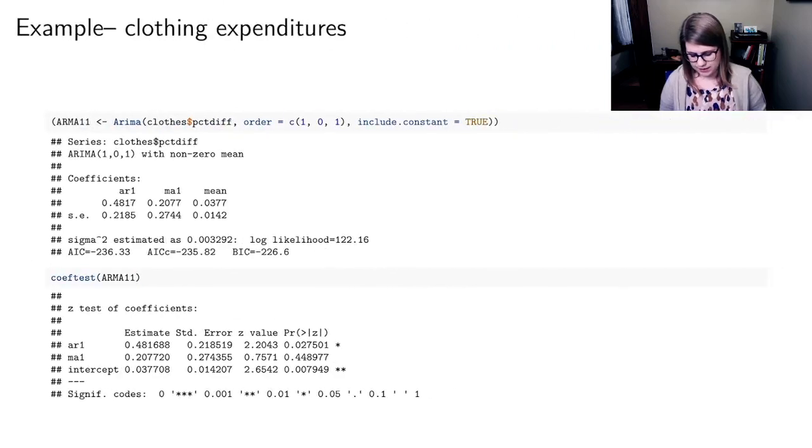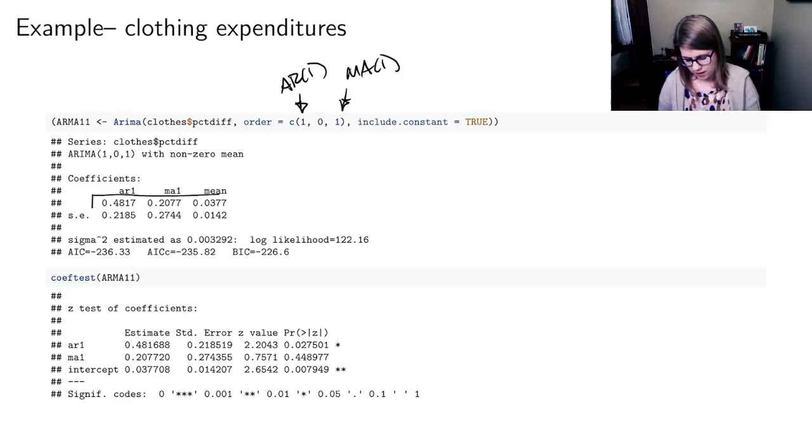So let's go back to our clothing expenditures. Now we've got an AR1, we've got an MA1, and we can put those in the same model. And now we get coefficients for the AR1, the MA1, and the constant. And we can see if these things are significant, it looks like the MA1 is actually not significant in this model, so we might not want to include that one.